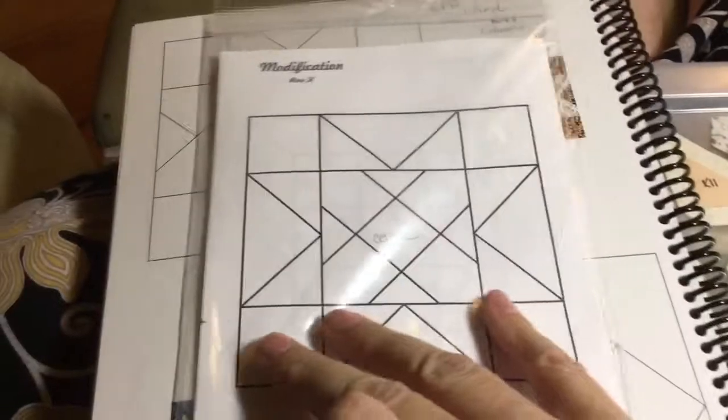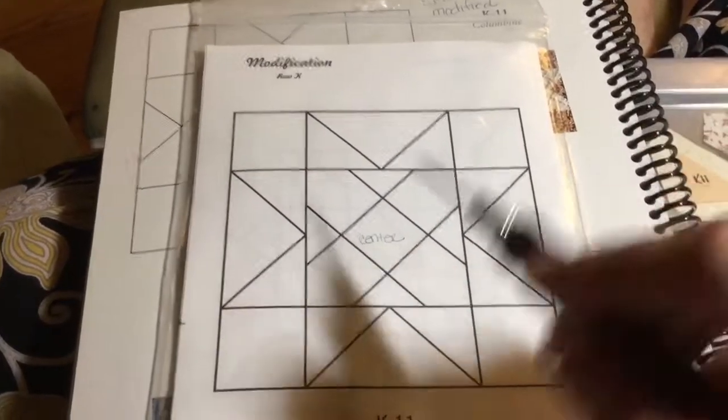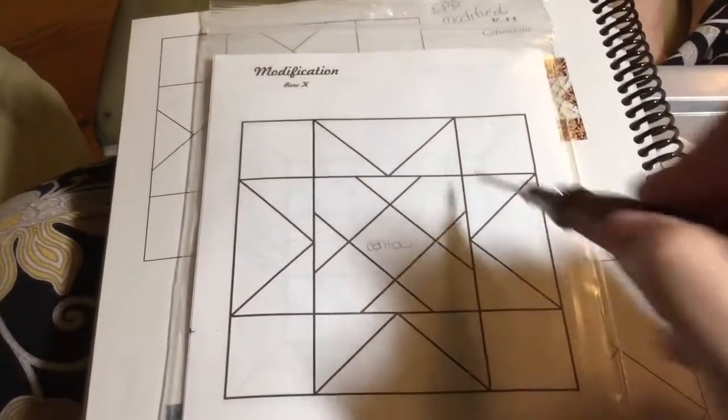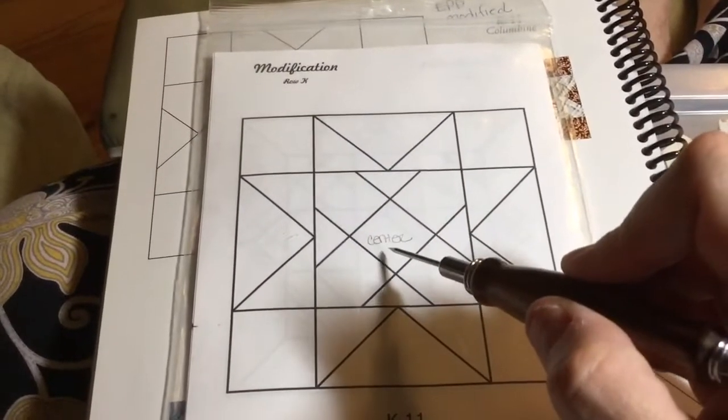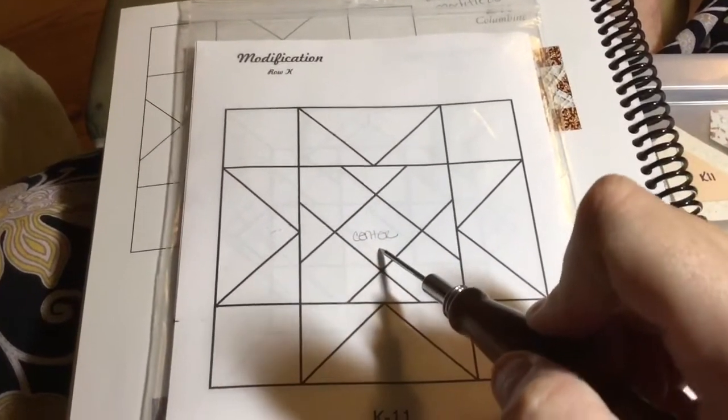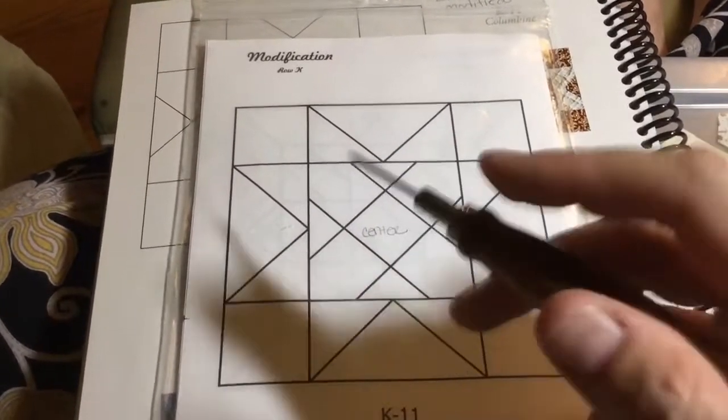So we're going to work from this and I wrote center on this block because it was really close in size to these four. When I sorted my squares I wanted to make sure that this one was designated as the center because it was smaller but close.